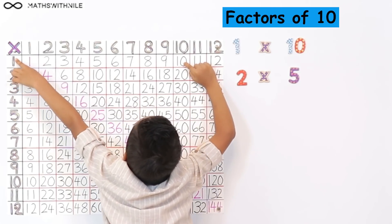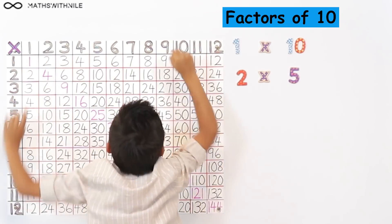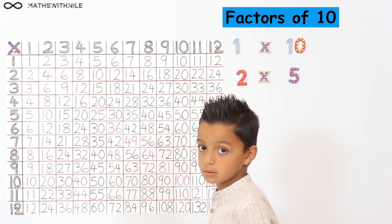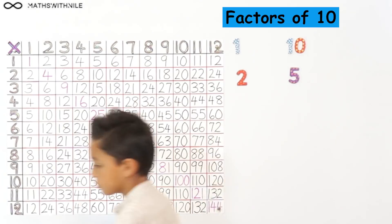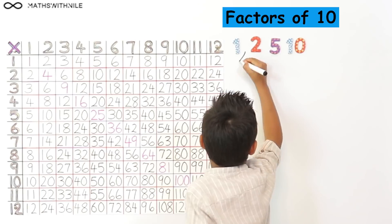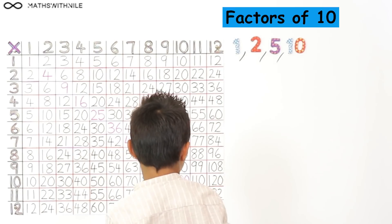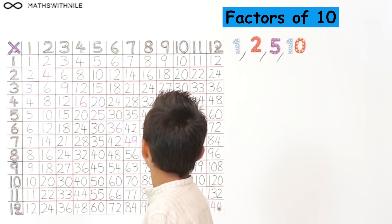Good, 1 and where's the 10? The 10. Very good. So now what I want you to do, I want you to list all the factors of 10 in order from the smallest to the largest. Okay, very good. So those are the factors of 10. 1, 2, 5 and 10. Brilliant.